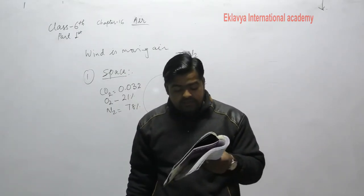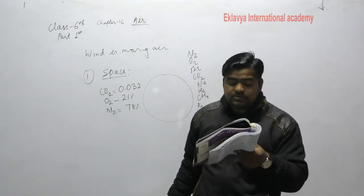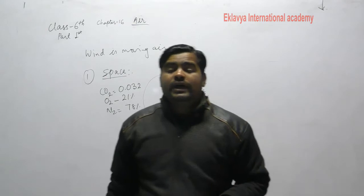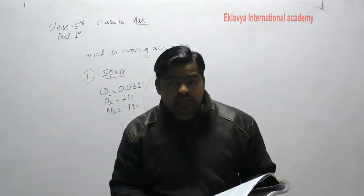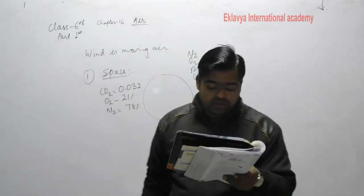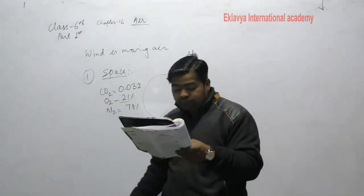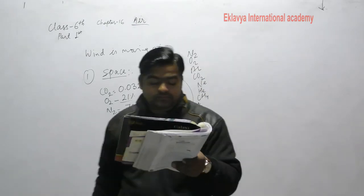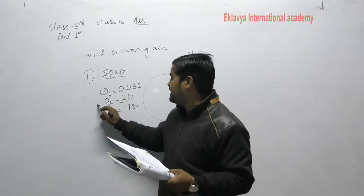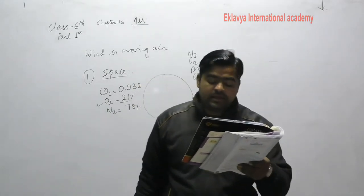Plants directly use nitrogen in the form of nitrates or nitrites to make their food, and we are dependent on that food. Animals, including human beings, get nitrogen through plants. Oxygen constitutes about 21 percent of air and is used by both plants and animals directly for respiration.